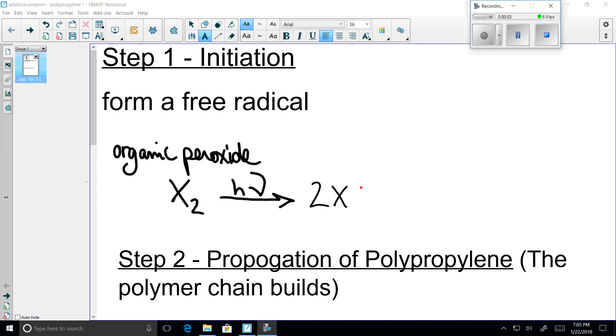This is polypropylene, the example completed in class. Step one, the initiation is completed here as shown in the previous video. An organic peroxide represented by X2 is acted on by ultraviolet light represented by H2 and produces two pieces of free radical 2X.